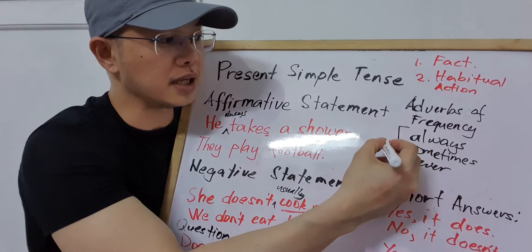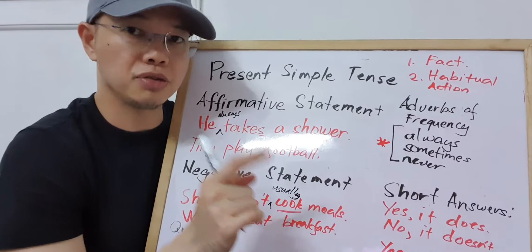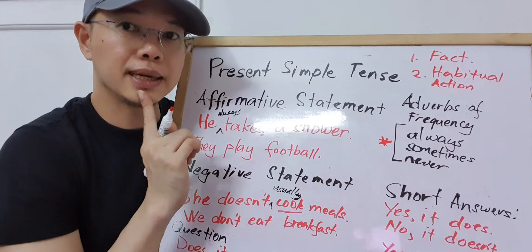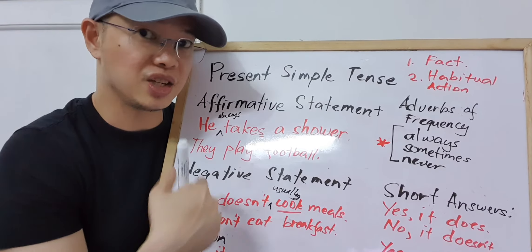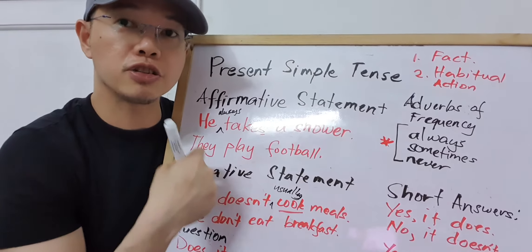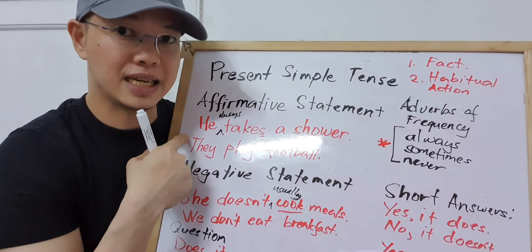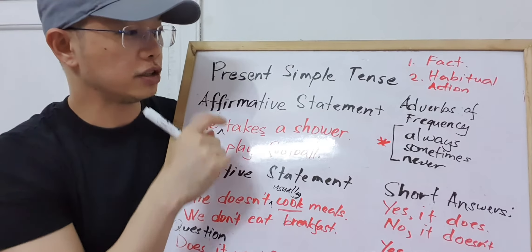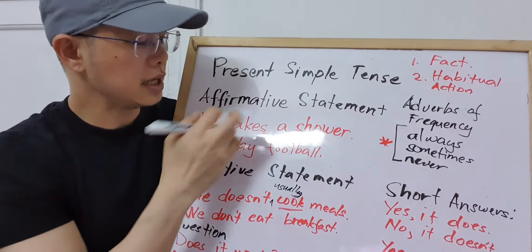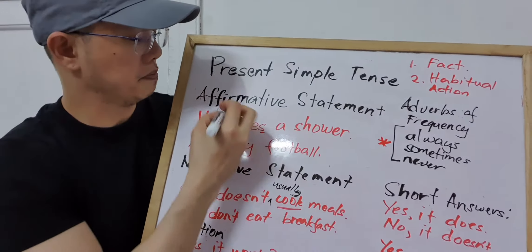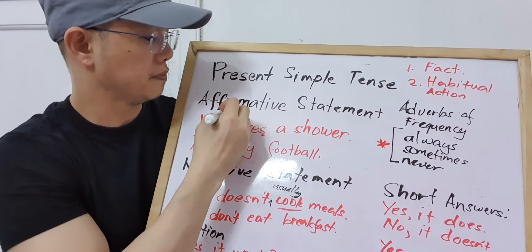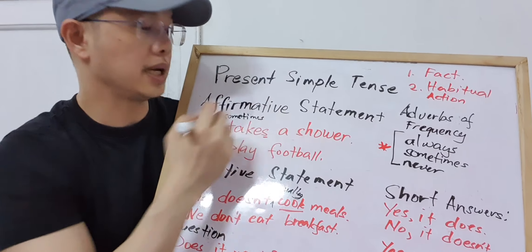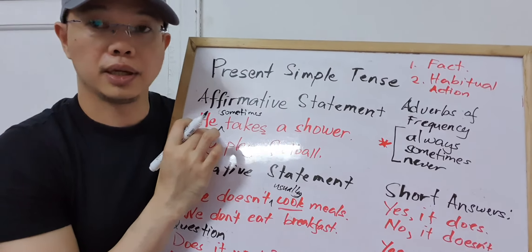For negative statements, the adverb of frequency should go after the auxiliary verb and before the main verb — that means between 'doesn't'/'don't' and the main verb. For example: 'She doesn't usually cook meals' — 'usually' is between 'doesn't' and 'cook.' Sometimes 'sometimes' and 'usually' have a special case: they can also appear at the beginning of the sentence.